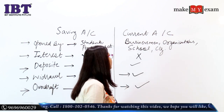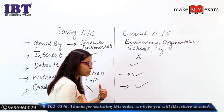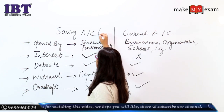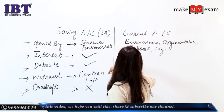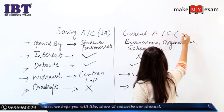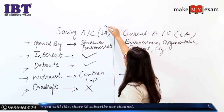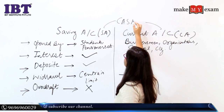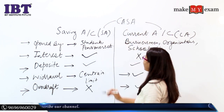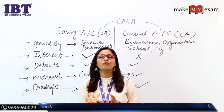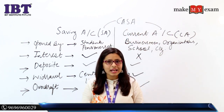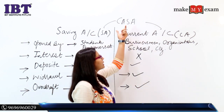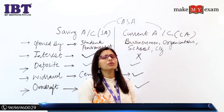If we talk about saving and current — as we have also discussed in this session — saving is referred to in short as SA, and current is called CA. Both together are known as CASA, meaning Current Account and Saving Account. This is a banking terminology called CASA.